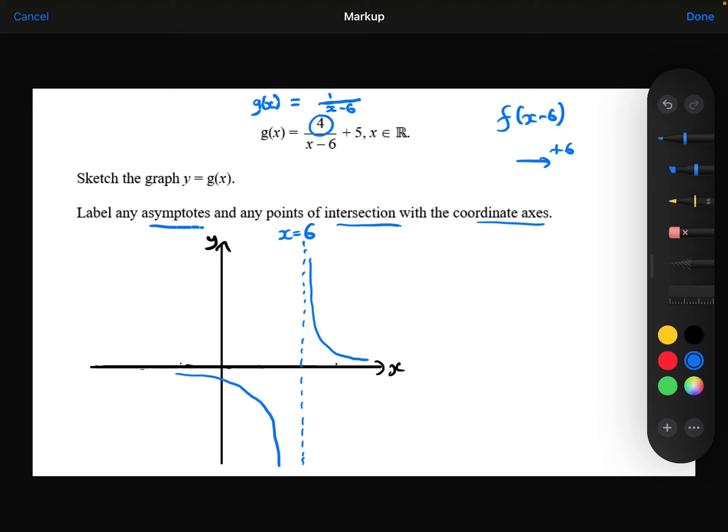The multiplying by 4 on the top, all that's going to do is multiply all the y coordinates by 4, so it's going to get a little bit steeper. All the y coordinates are going to be bigger, so it's going to look something like that.